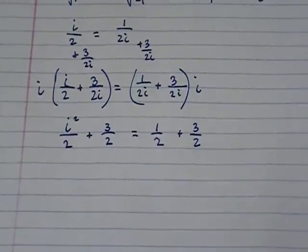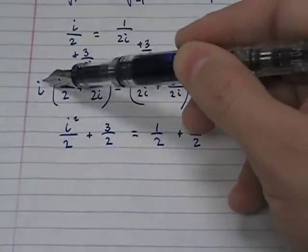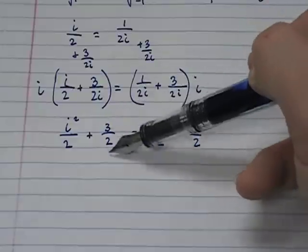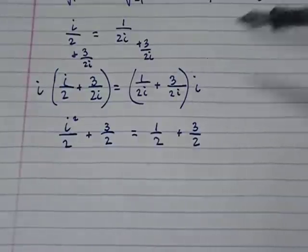So far, so good. And what happens here is you're going to distribute this. i times i is i². You're going to have an i on top, you're going to have an i on bottom, they're going to cancel, so you get 3/2. And both of these i's are going to cancel with this guy here.